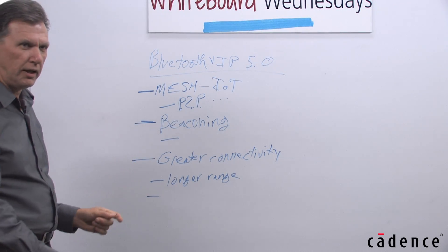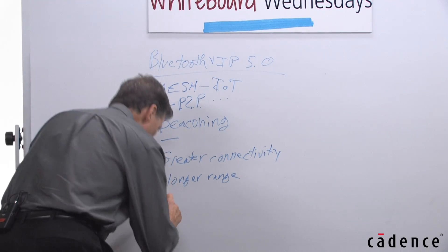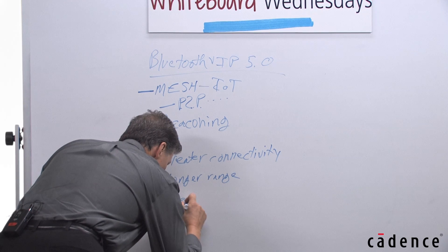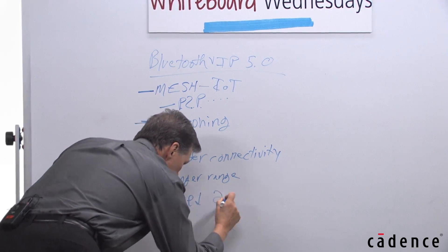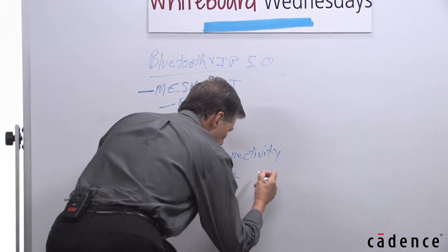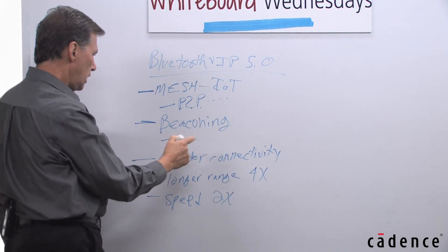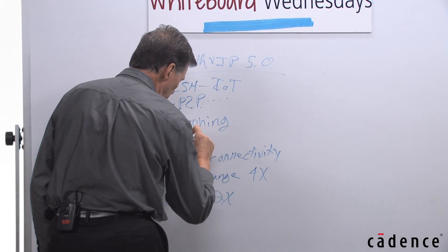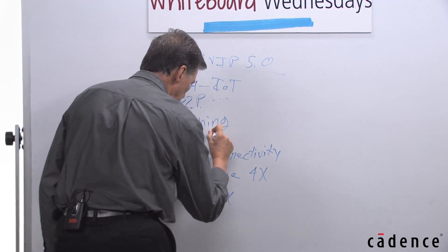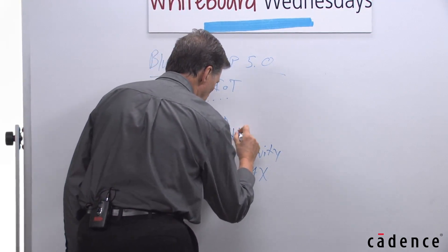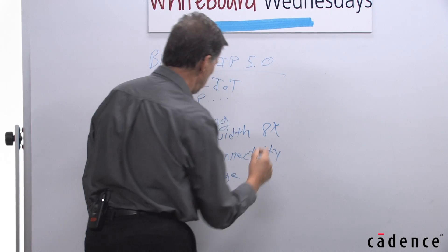In addition to longer range, Bluetooth 5.0 also introduces speed improvements. The anticipated improvements in speed are two times the speed of the current Bluetooth and 4x the longer range. And the beaconing support on bandwidth improvements here is actually targeted to be 8x improvements in bandwidth for beaconing.